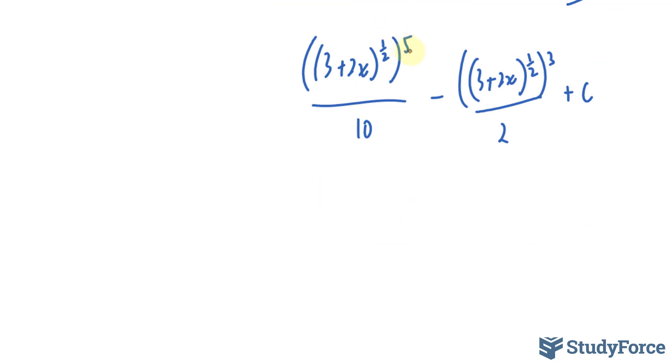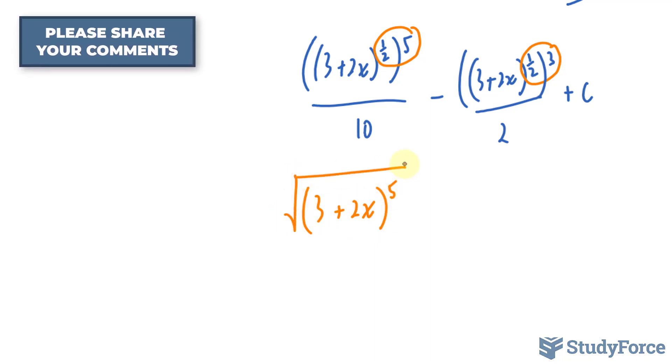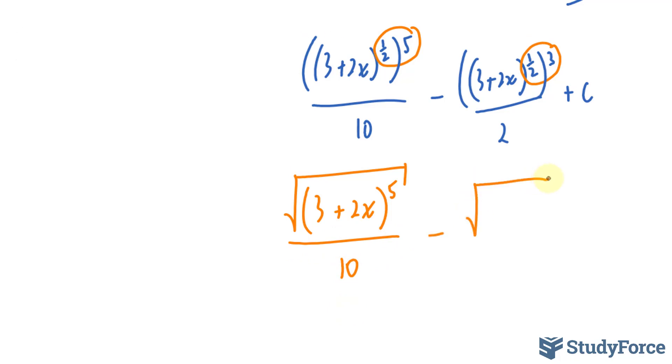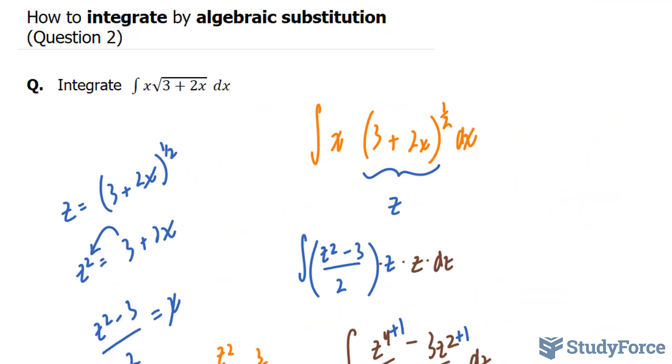Now, multiplying 5 and half gives us (3 plus 2x) to the power of 5/2 over 10, and the square root of (3 plus 2x) all raised to the power of 3 over 2, plus c. And this is the integral of the function we started with.